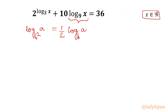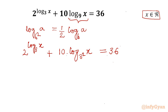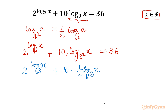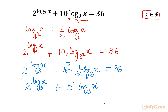I can write our equation as 2^(log x base 3) plus 10 times log x base 9 equals 36. Since the base 9 can be written as 3², I apply the property: 10 times log x base 9 becomes 10 times one-half log x base 3, which simplifies to 5 times log x base 3. So the equation becomes 2^(log x base 3) plus 5 times log x base 3, equal to 36.